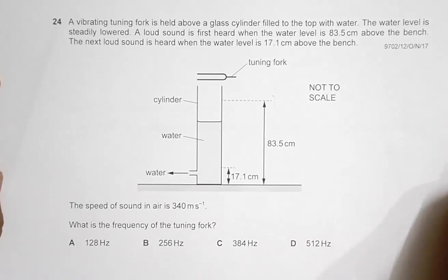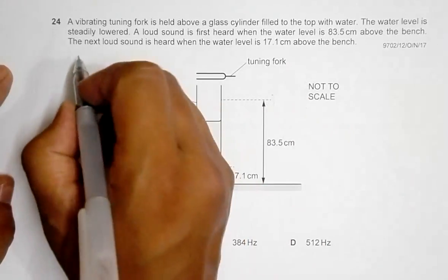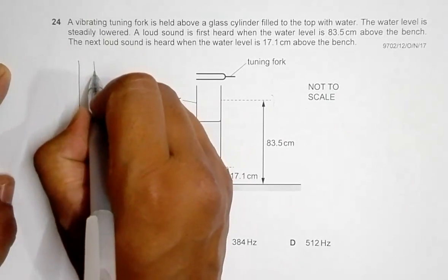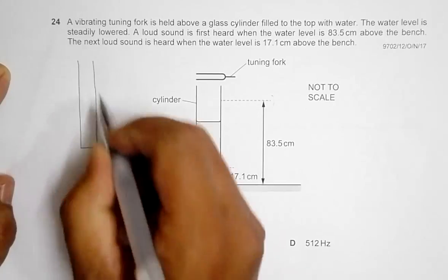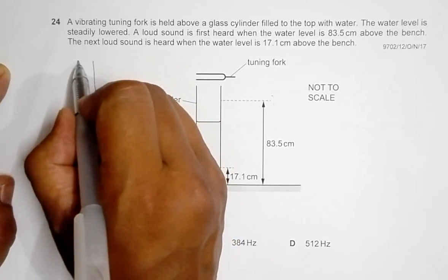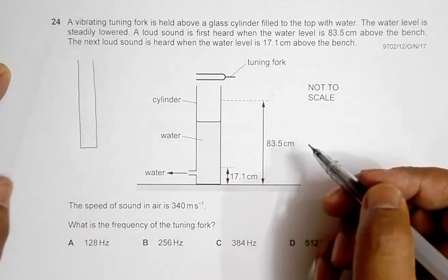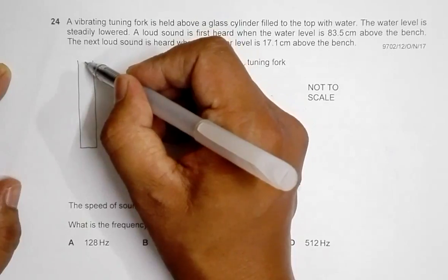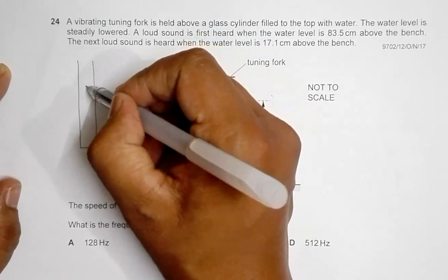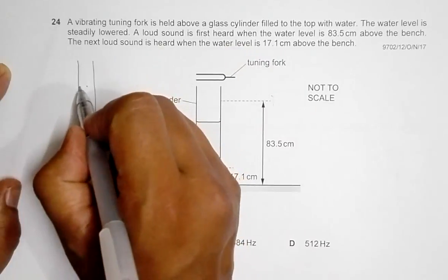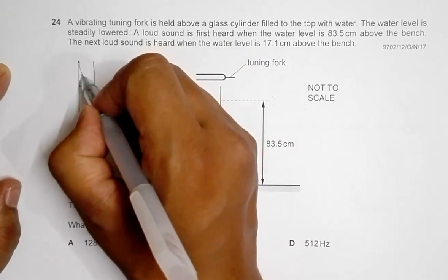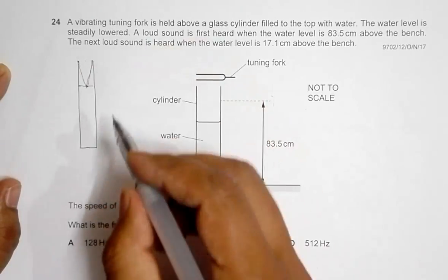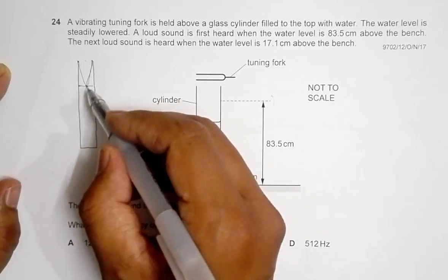Let's realize that in a long tube — as we have drawn here — with an open end at the top, as we empty water from this tube, resonance occurs at specific water levels. When the water level was at the first position, a loud sound was produced, which means there is a node at that water surface. That is the first resonance condition.